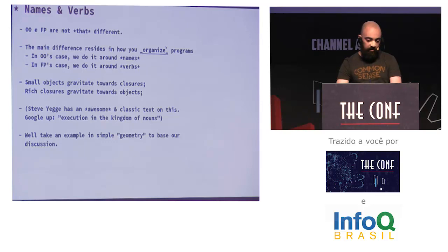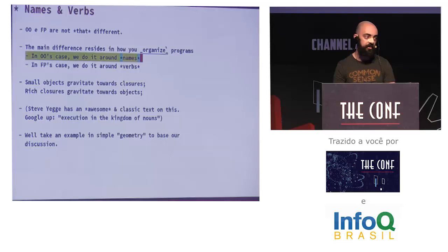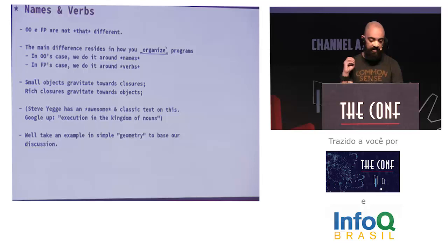Now I'm going to talk a bit about names and verbs — I'm going to digress a bit. I claim that OO and functional programming are not that different. The main difference resides in how you organize programs — not in the program itself or how you solve problems, but how you organize. In OO's case, we do it around names, around entities. You have classes and those things are substantives, names. In functional programming, we do it around verbs, around operations. The focus is on operations and how you transform data, not on data itself.